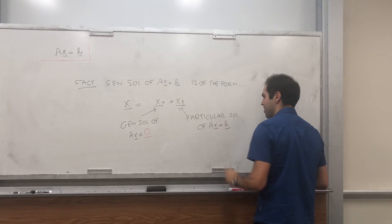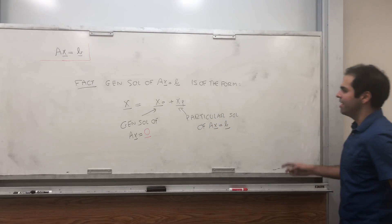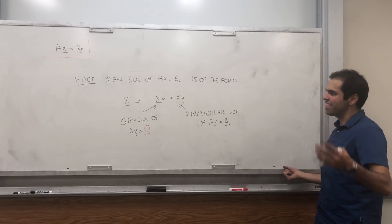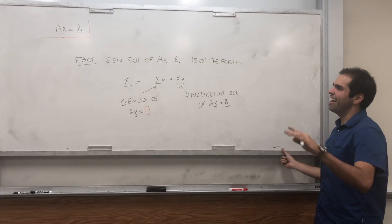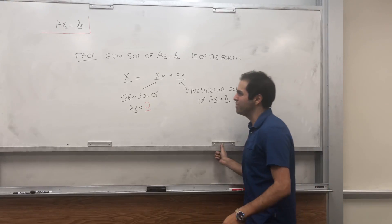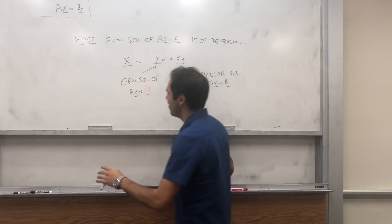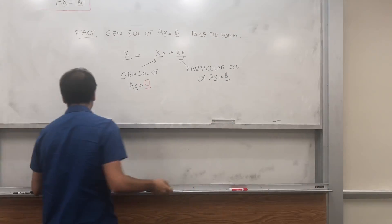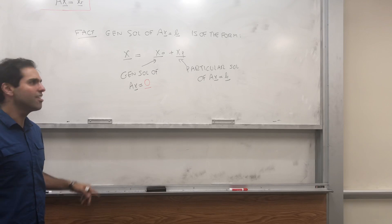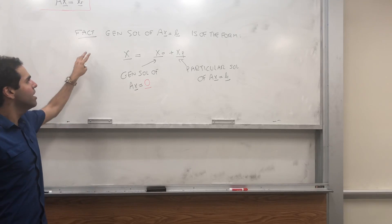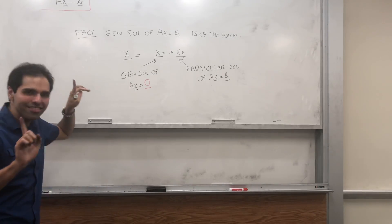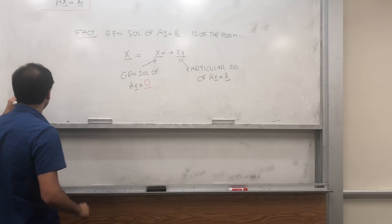Let me illustrate this. In theory it's useful to solve Ax equals b this way, although in practice it's already easy to solve directly, so this approach is unnecessary in practice but very useful in theory.